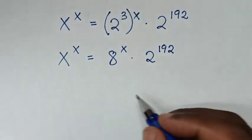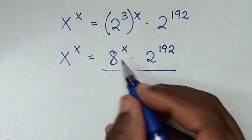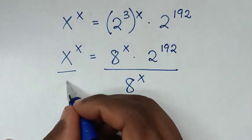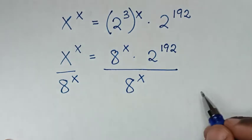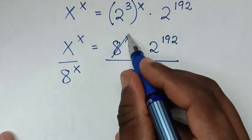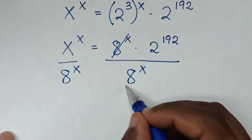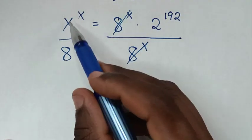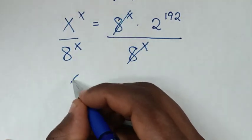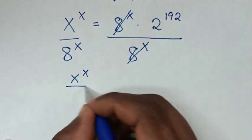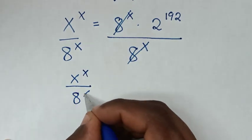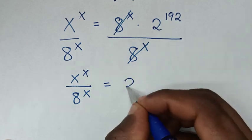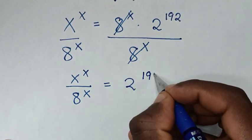In the next step we will divide by 8 power of x on both sides. So this 8 power of x will cancel this 8 power of x. Then it will be x power of x over 8 power of x, which is equal to 2 power of 192.